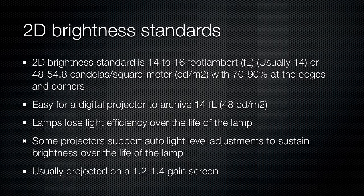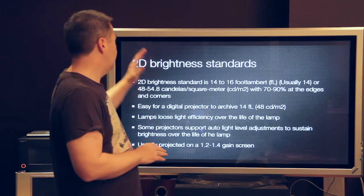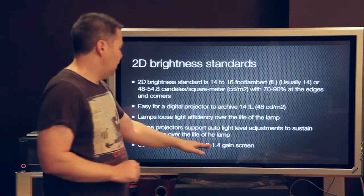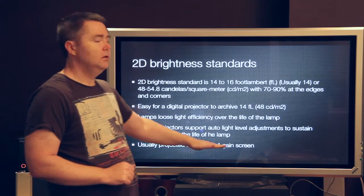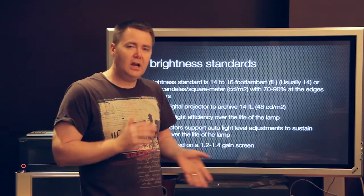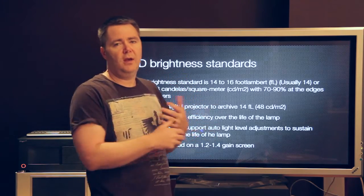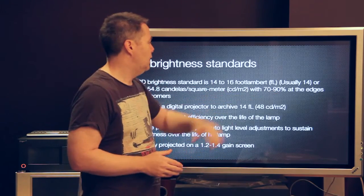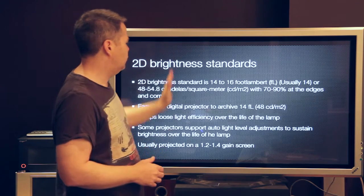Now, 2D brightness standards. 70 to 16 foot lamberts, generally 14 that you aim for. I've also got the standards from Europe, which my European friends wanted me to mention. It's interesting to note the 70 to 90% at the extremities of the screen as part of the standard — that's related to the 1.2 to 1.4 gain. So even though you're using 2D, they usually use a pearl screen or a high gain screen. You can still get some hot spotting in the middle, but it's far less compared to a silver screen where the gain is over 2. That's why the standard allows for that drop-off on the edges.